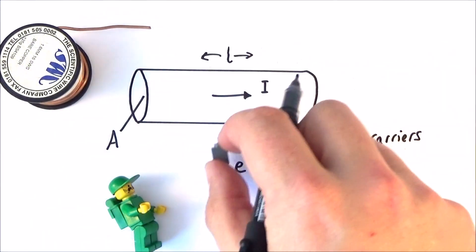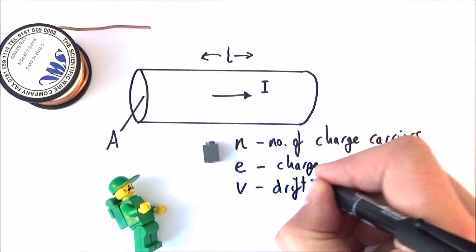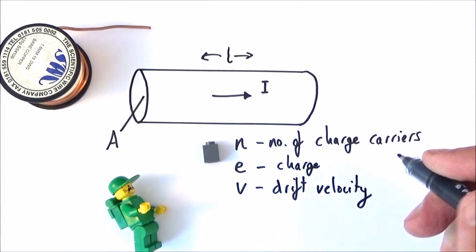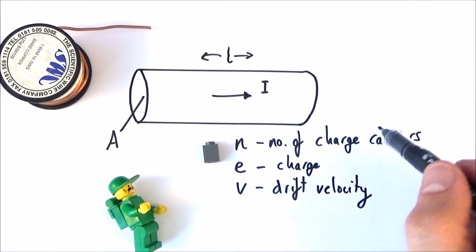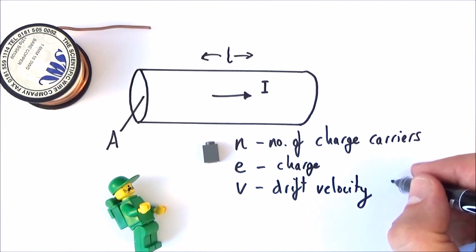And if we think about all of these things which are moving through, they're all going to have their own velocity, which we're going to call their drift velocity. If we keep everything in SI units, so number of charge carriers is just a number, charge is Coulombs, length in meters, current in amps, then the drift velocity should come out with the units of meters per second.